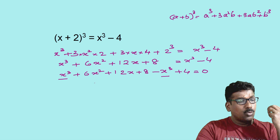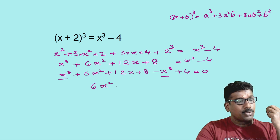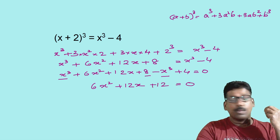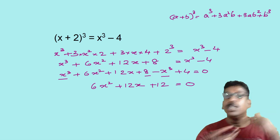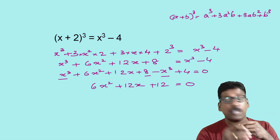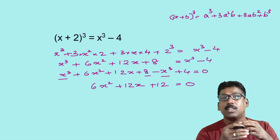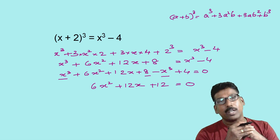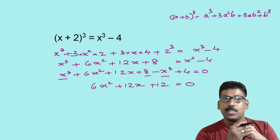So you get 6x squared plus 12x, and 8 plus 4 is 12, equal to 0. This is also in the form ax squared plus bx plus c is equal to 0. Therefore, this is also a quadratic equation.